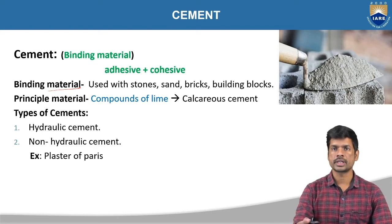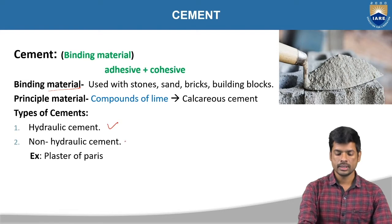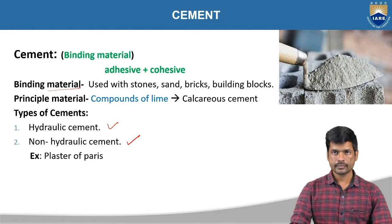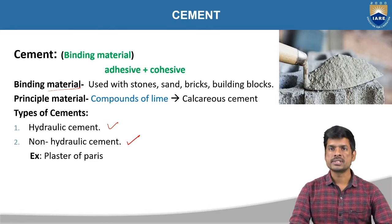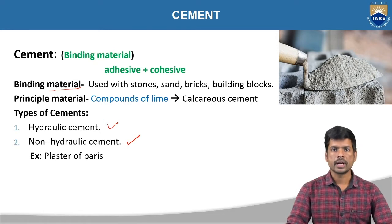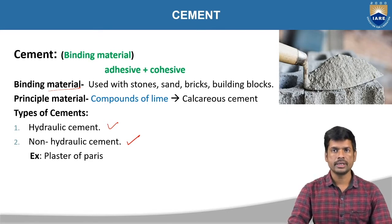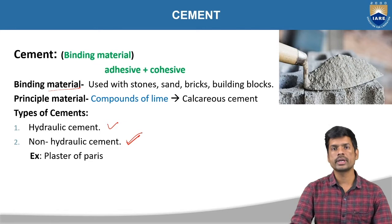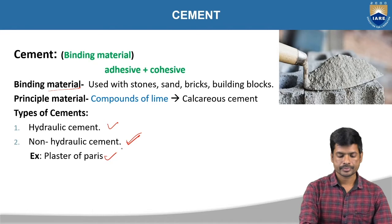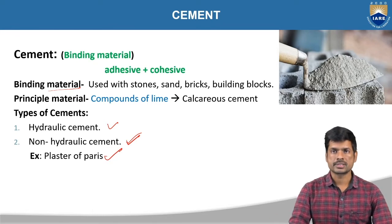Coming to the different types of cement, we are having hydraulic cement and non-hydraulic cement. These are the two different types. An example for hydraulic cement is OPC — different types of normal cements. That means when you add water, it is going to react with the water and form new products. Non-hydraulic cement is not going to react with water — the example is plaster of Paris.